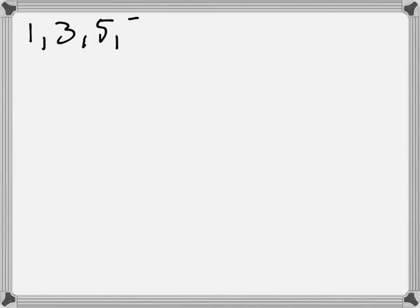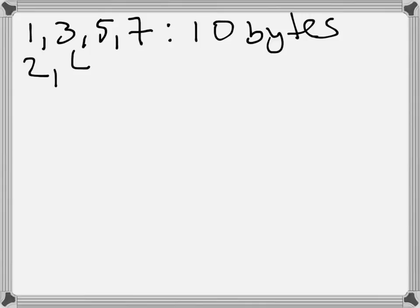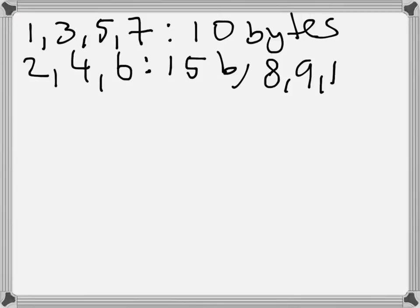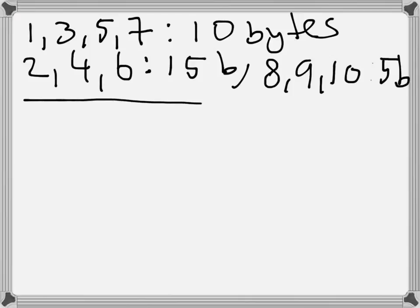Packet numbers 1, 3, 5, and 7 each contain 10 bytes. Packets number 2, 4, and 6 each contain 15 bytes, and packets number 8, 9, and 10 each contain 5 bytes. I'll just write 'B' — it still means bytes but then I can fit it into one line.